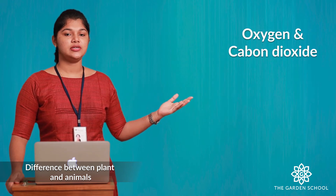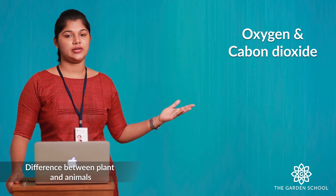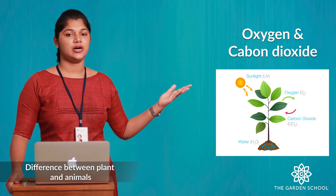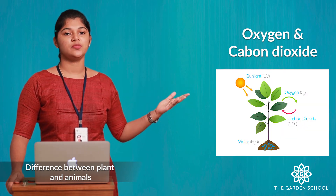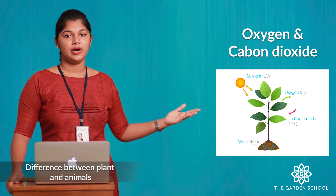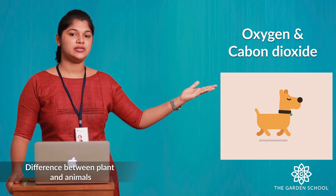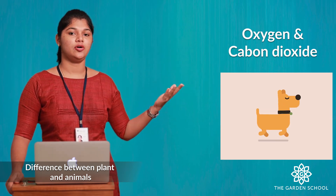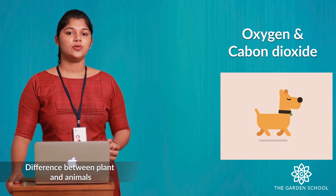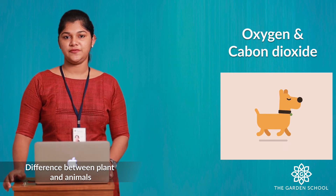The third difference is oxygen and carbon dioxide. Plants need carbon dioxide to make their own food. But animals need oxygen to breathe. So the gas exchange is different between plants and animals.